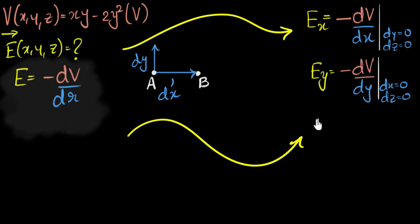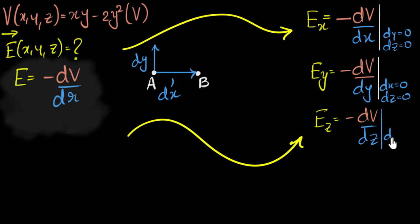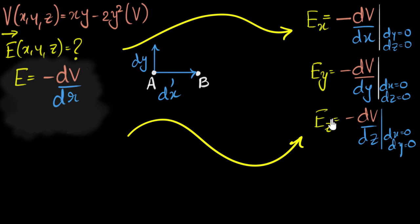The same thing I can do along the Z direction — that'll give me the Z component of the electric field, making sure dx is zero and dy is zero. Once I have the three components, I can put them together using i-cap, j-cap, and k-cap, and write down what my electric field is going to be. Can you now pause the video, take a breather, and use your calculus and differentiation to figure out what the electric field is going to be? Pause and give it a shot.